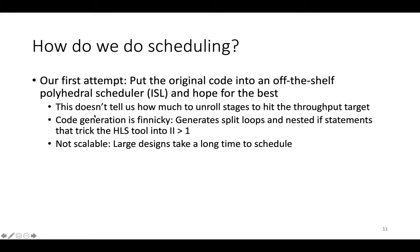There are a few problems. First, polyhedral schedulers reorganize statements for higher locality, but they don't tell you how much you should unroll each stage to reach a throughput target — they don't know much about resource allocation. Second, code generation is finicky: the ISL code generator will sometimes split up loops or create complicated nested statements that confuse the HLS tool into generating an II above one, which is catastrophic. Third, they're not scalable — large designs take a very long time to schedule, and polyhedral tools like ISL don't scale beyond a few dozen statements, whereas we need to compile applications with hundreds of statements, fast enough to run unit tests many times a day during active development at Stanford.